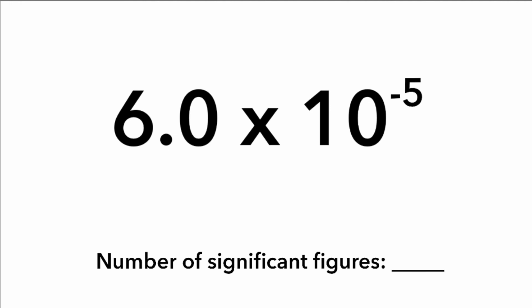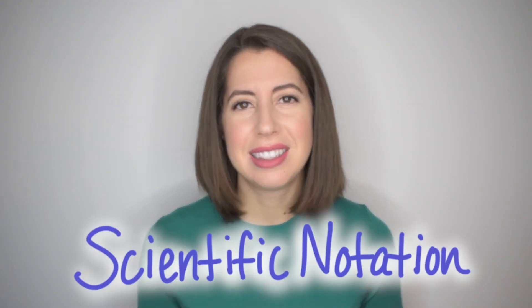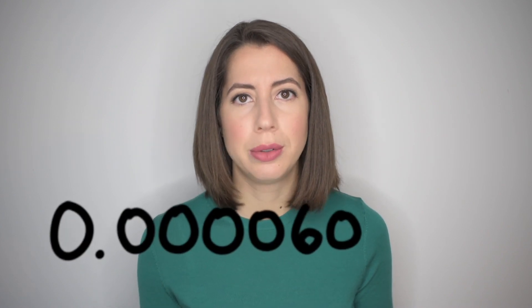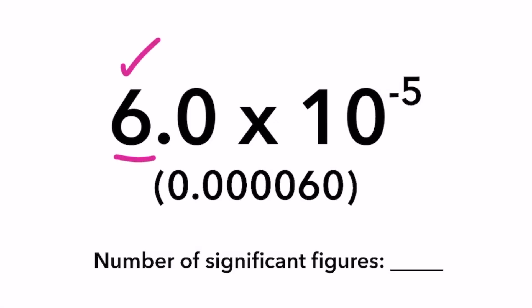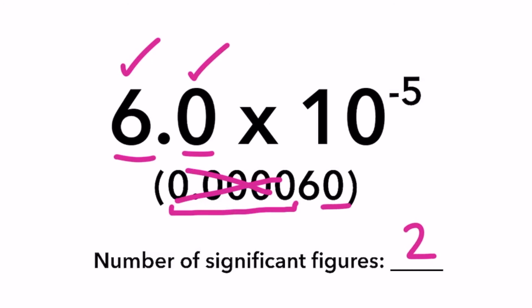Example three: 6.0 times ten to the negative fifth power. This number is written in scientific notation, meaning it represents the value 0.000060. But as you can see, that's not very convenient to write, so we use scientific notation to make numbers more convenient. The number six is a non-zero number, so it is significant. The leading zeros do not count as significant, but the ending zero does because of the decimal point. So our final answer is two significant figures.